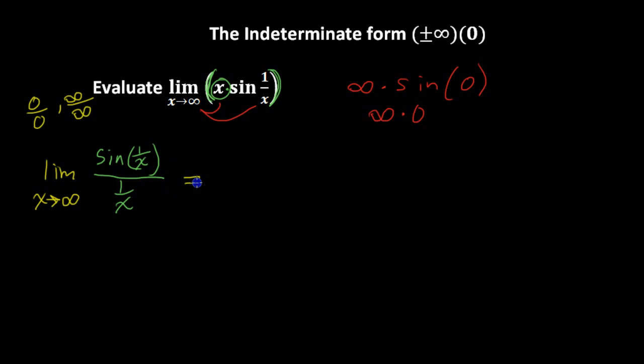So this equals, applying L'Hopital's rule now, this equals the limit as x approaches infinity. First derivative of sine is cosine, so I'm going to write cosine of 1 over x. Now, remember the chain rule, and the derivative of what's inside here, of 1 over x, is negative 1 over x squared.